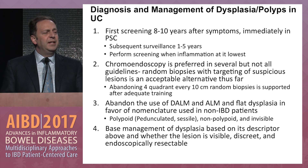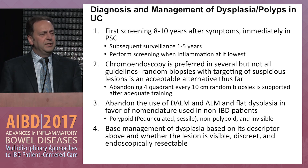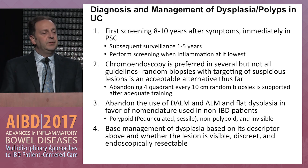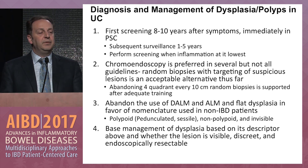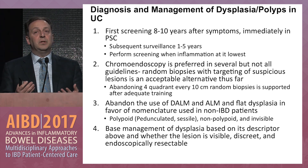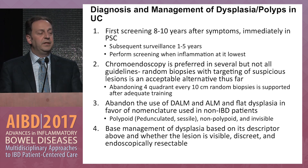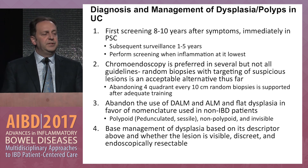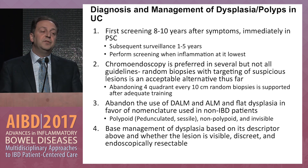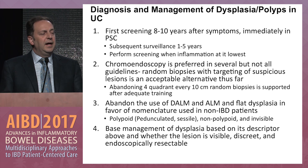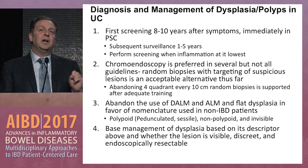In summary, how to manage dysplasia in IBD: first screening 8 to 10 years after symptom onset, immediately in primary sclerosing cholangitis. Chromoendoscopy is the preferred modality, though there are still questions about value added. Even without chromoendoscopy, a high-quality exam using your eyes gets you 95% of the way there. Abandon ALM and DALM nomenclature in favor of terminology you already use in non-IBD patients. Base management of dysplasia on the endoscopic description — these descriptions make it more obvious what you need to do.